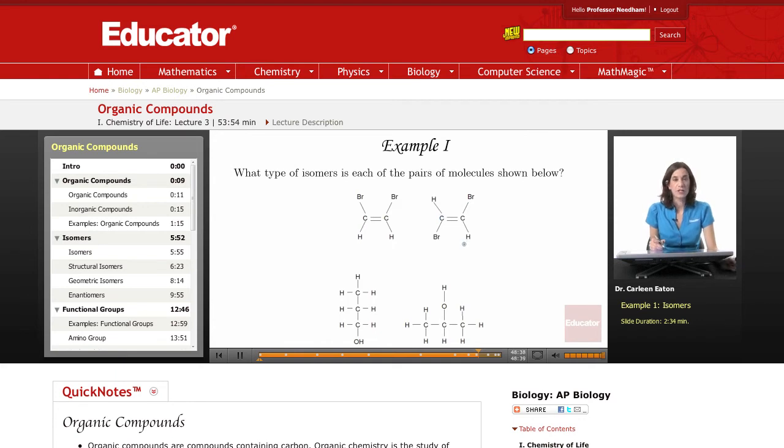The first type of isomer is a structural isomer. So let's see if they have the same bonding partners. Each carbon is double bonded to another carbon on both of these. And then each carbon is bonded to bromine and hydrogen. Bromine, hydrogen. Same here.